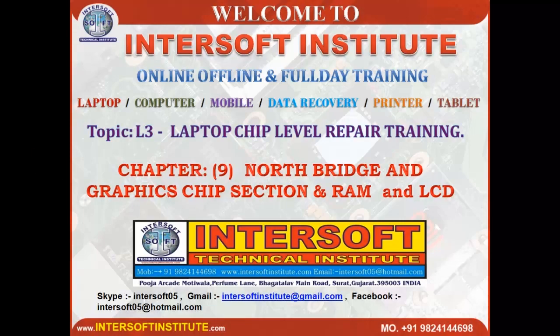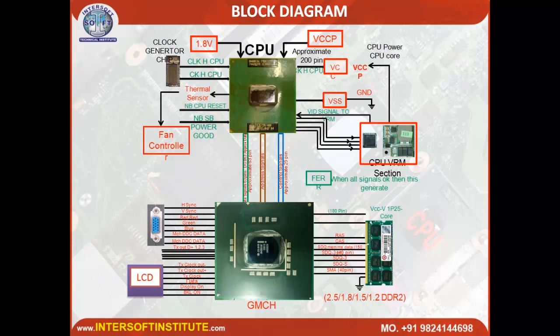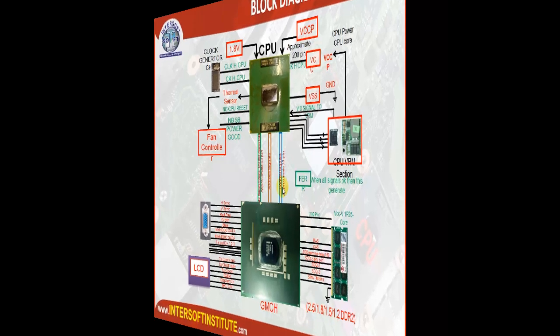Chapter 9: northbridge and graphic chip section, RAM and LCD connections. In an older motherboard, the CPU is connected with the clock generator, which gives frequency to the CPU. In older boards — meaning before i3/i5/i7 where northbridge and southbridge were used — the CPU was further connected via address bus, data bus, and control bus.